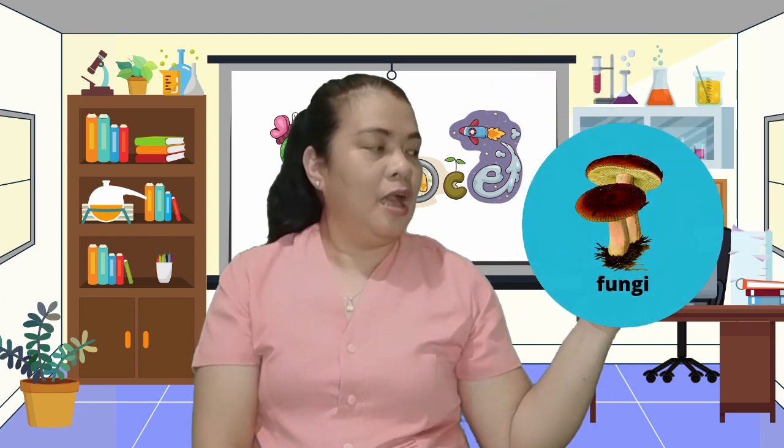Did you know that an ecosystem is the relationship between biotic and abiotic factors in a certain place? Biotic factors are living organisms that shape the environment. They include plants, animals, fungi, microorganisms, and man.